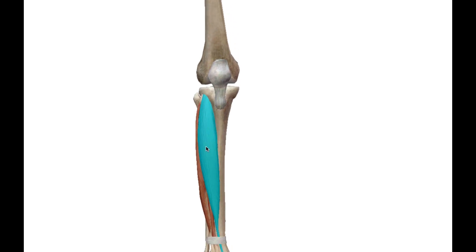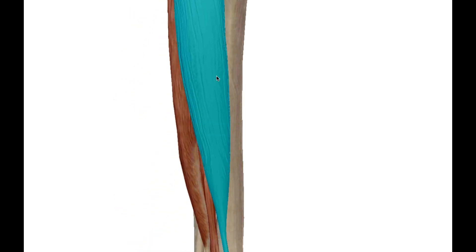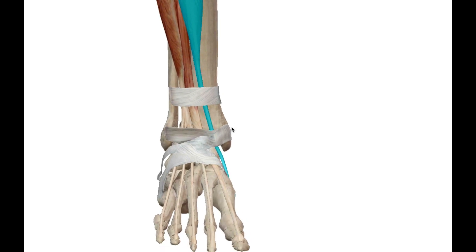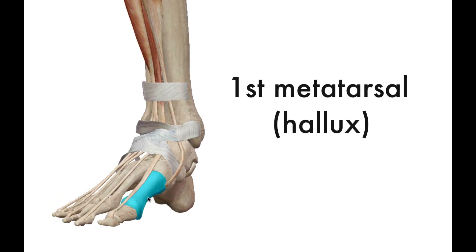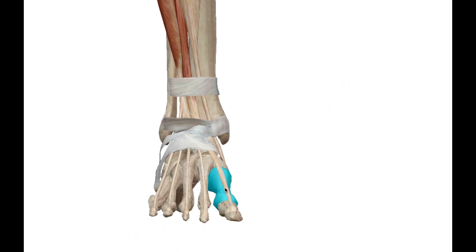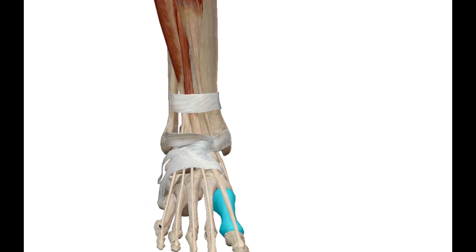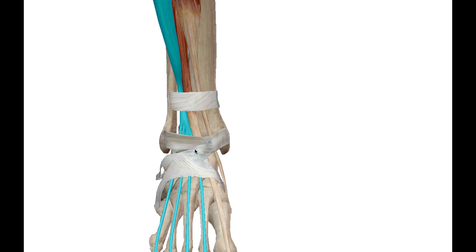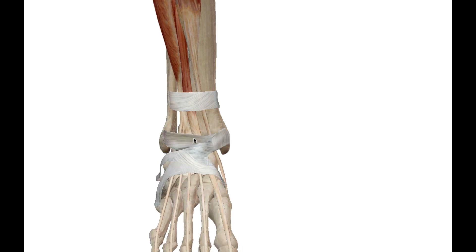The tibialis anterior originates at the lateral condyle of the tibia, makes its way down, wraps around the ankle onto the medial aspect, and comes into contact with the first metatarsal of the hallux — the big toe. Phalange number one is the big toe and phalange number five is the pinky toe. You'll also notice the retinaculum that wraps around the ankle, keeping these tendons close to the body so they don't pop out.